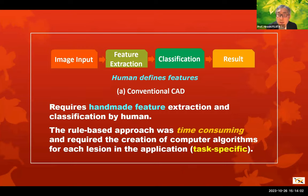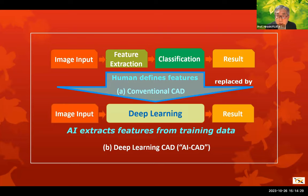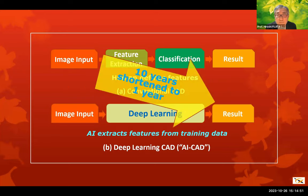Traditional CAD requires handmade feature extraction and classification by humans. Such a rule-based approach was time-consuming and required creation of computer algorithms for each region of application. On the other hand, deep learning-based CAD — sometimes called AI CAD — replaces these steps with deep learning. AI extracts features from training data, making it much easier to handle. By incorporating deep learning into traditional CAD, we have been able to shorten the CAD development process from 10 years to 1 year or even less.